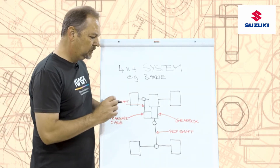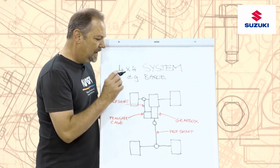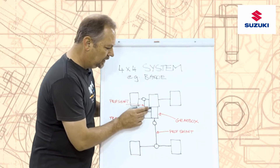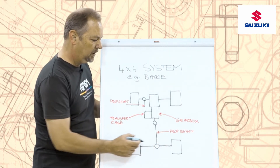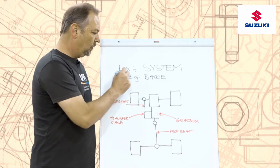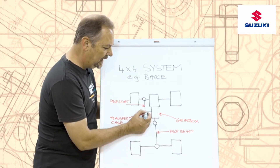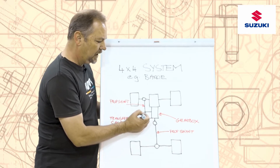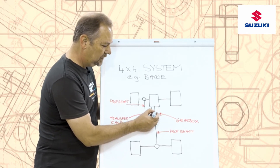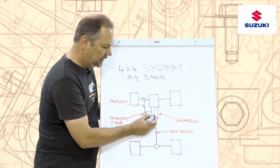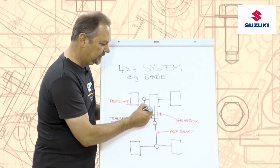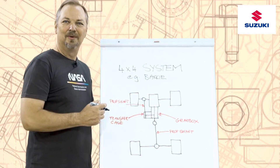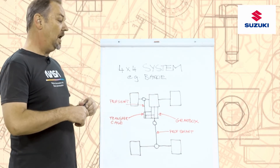The way that we engage four-wheel drive on this system is that initially when we're in two-high, the power is going through the engine, through the gearbox, through our rear prop shaft to our rear wheels. When we engage four-by-four, what we're doing is selecting the transfer case, which has a chain that connects the gearbox to the transfer case — we now engage that chain. So now the chain turns this shaft, which now turns our front wheels. It's a very basic, very robust, very reliable system.